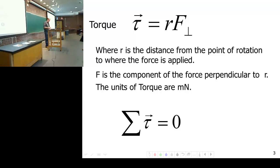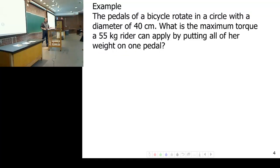So then we use the sum of the torques equals zero. We'll solve a couple problems here today to kind of get a sense of how we use these. All right. So here's just a basic one. Pedals of a bicycle rotate in a circle with a diameter of 40 centimeters. What is the maximum torque a 55 kg rider can apply by putting all her weight on one pedal?